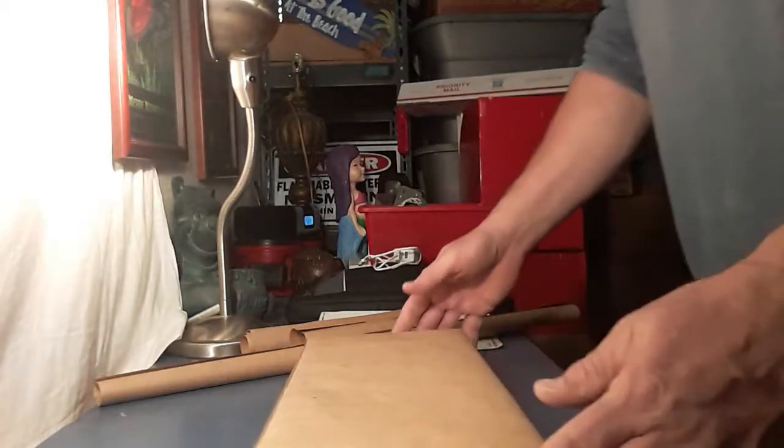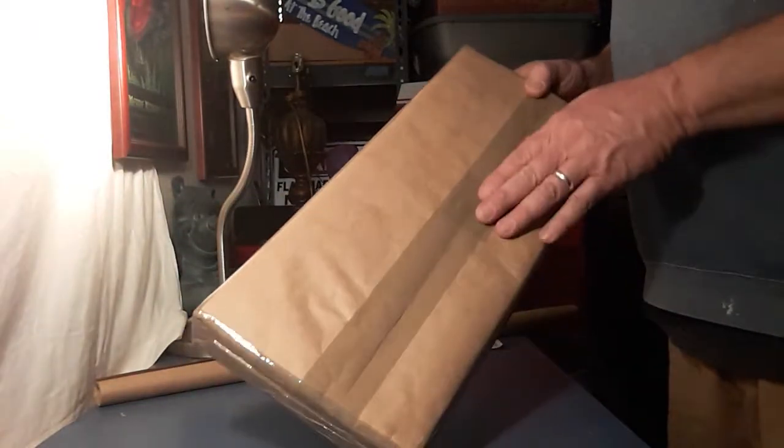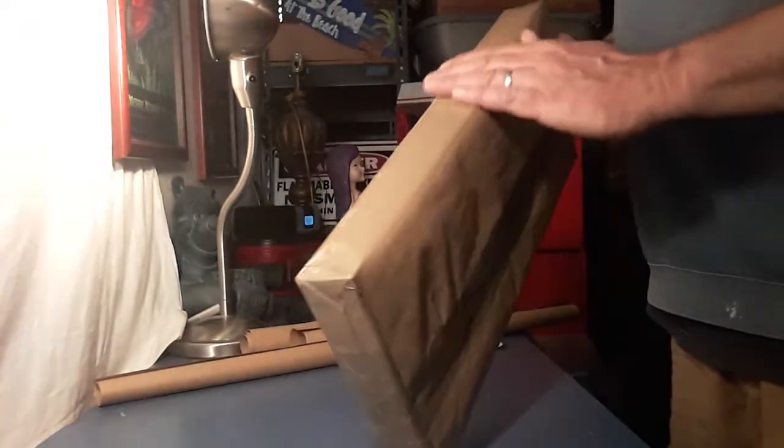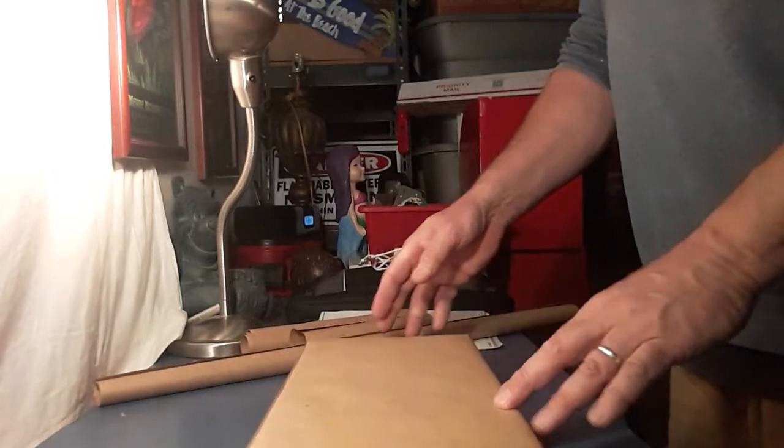Welcome back guys, part two of our odd shape box. This is the final product - we've taped it up, protected it with tape around the edges and sides, and wrapped it in brown crafting paper.